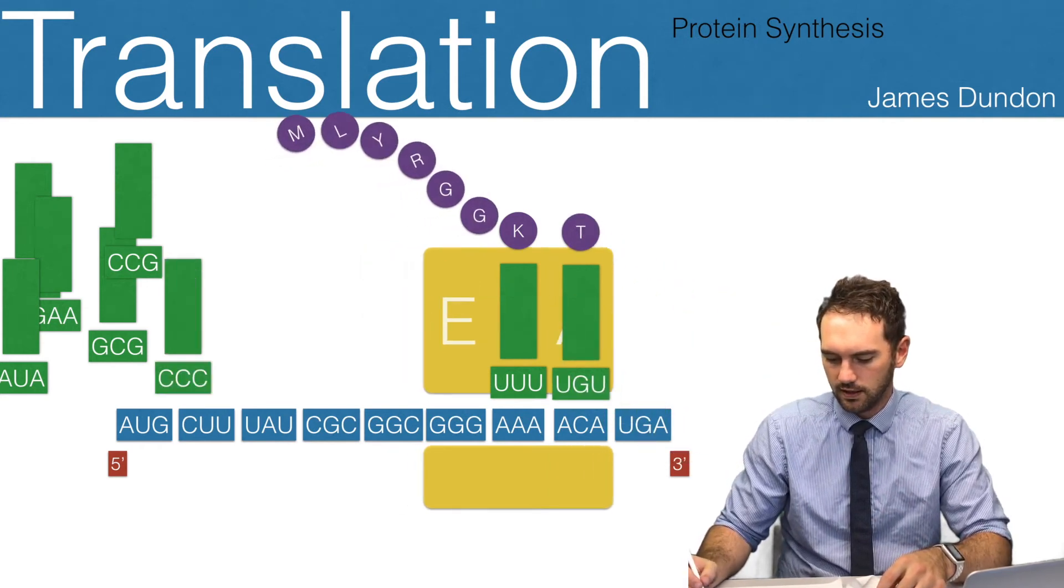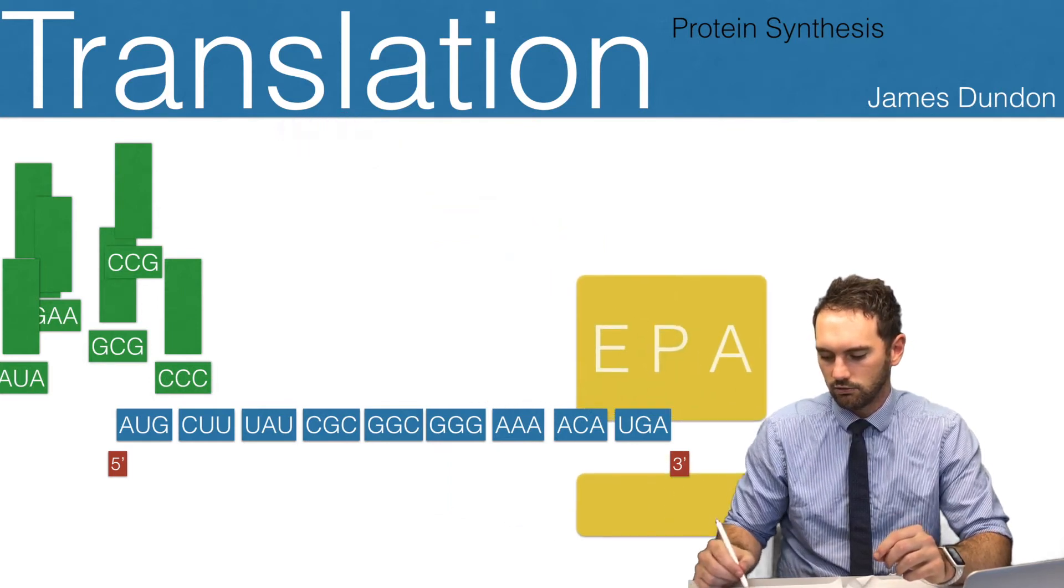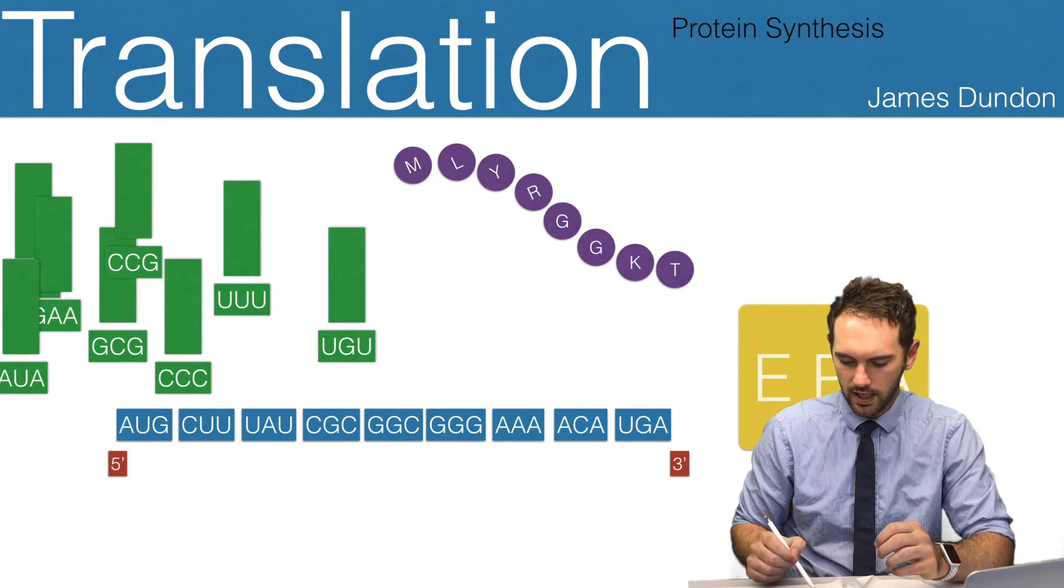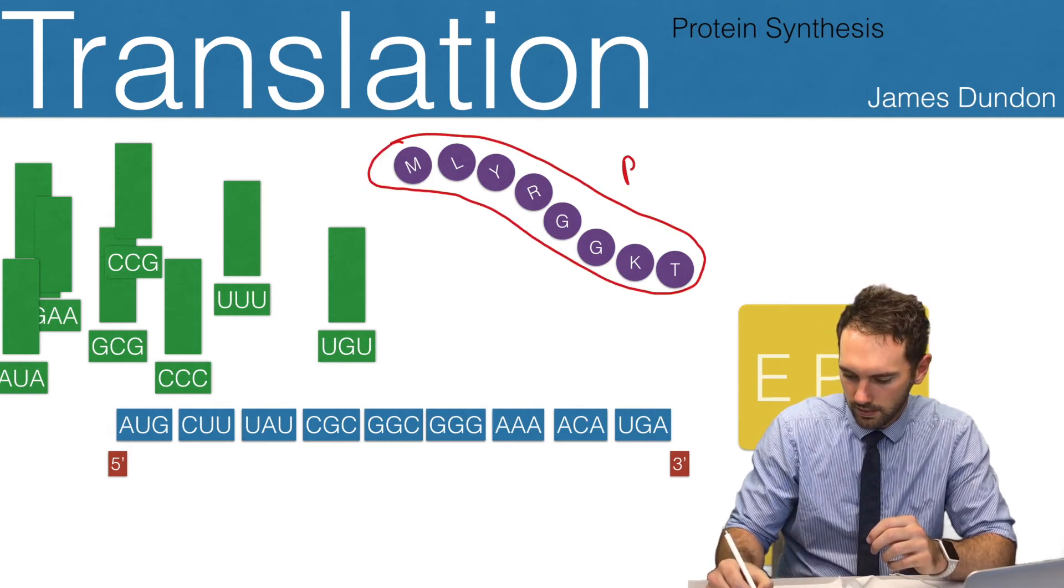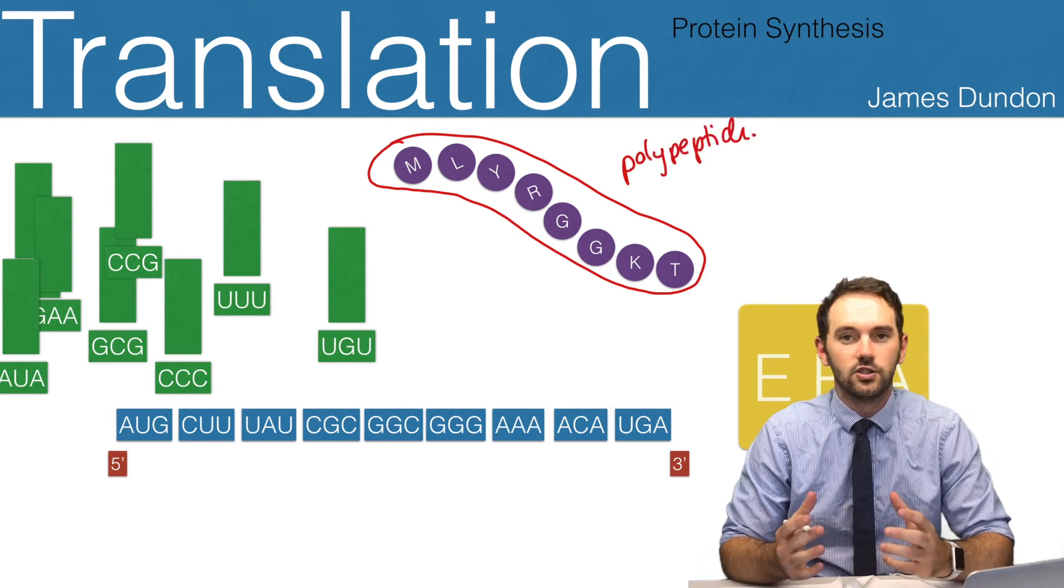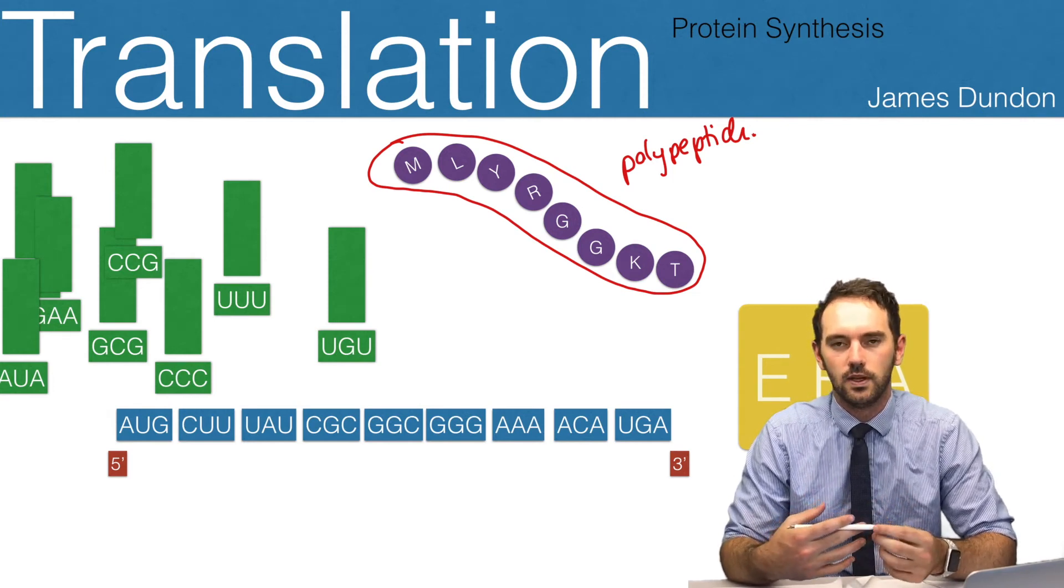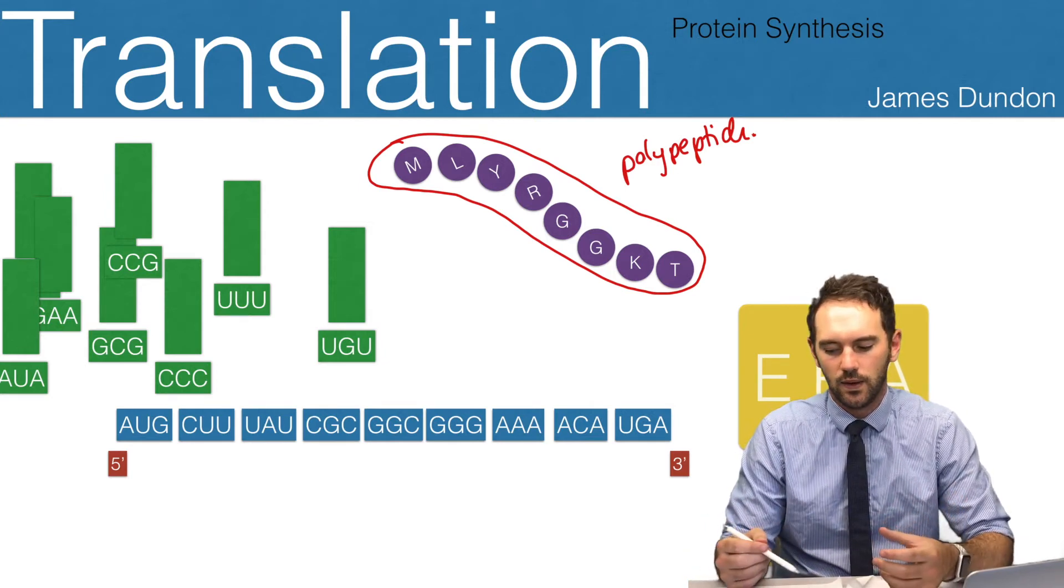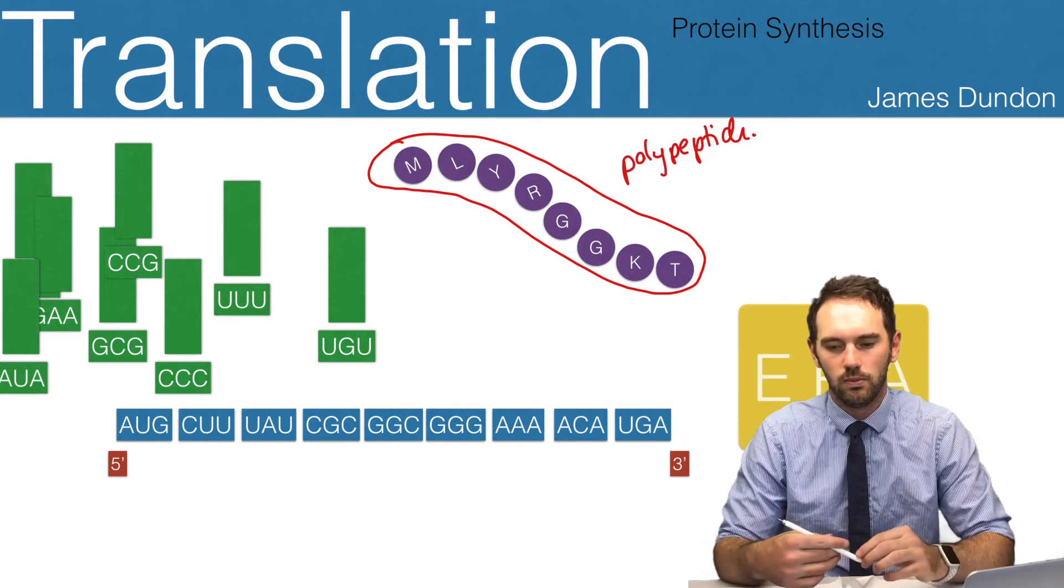Until finally, we get to our stop codon, and that tells our ribosome to break away. Now we've got our amino acid chain, or our polypeptide, finished. That polypeptide is already going to be folding and starting to take shape. It stays in that polypeptide in its original shape, just as a single polypeptide, and it's now going to form a protein. However, in some occasions, multiple polypeptides join together and form a larger, more complex protein.